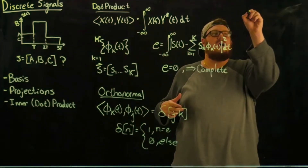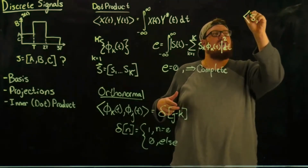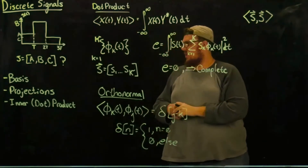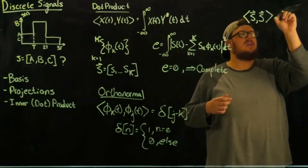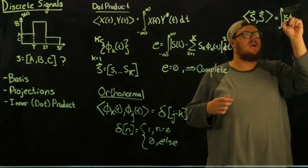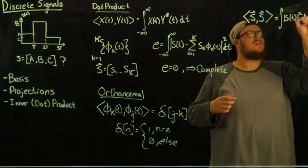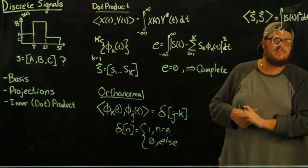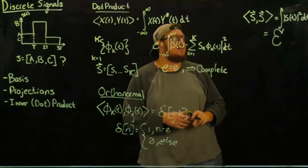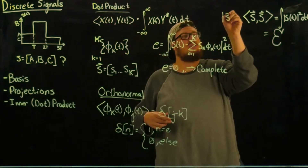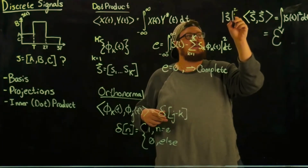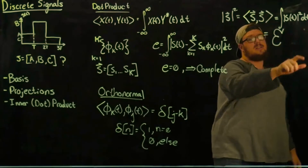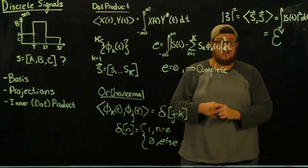One useful property is that the inner product of s with itself equals the integral over the magnitude squared of s(t), which is actually just the energy in your signal. This is very useful — it says that the magnitude squared of your vector represented with respect to this orthonormal basis, equaling the dot product with itself, equaling this integral, is indeed just the energy of the signal.